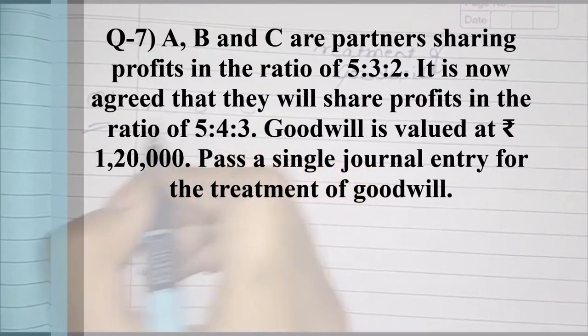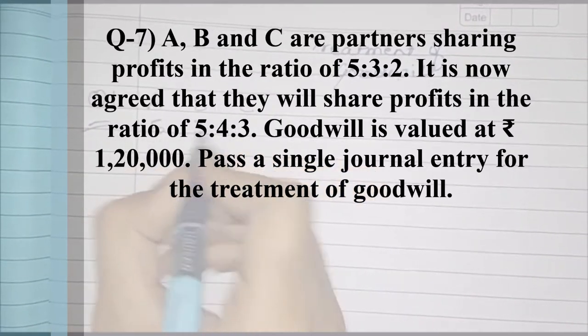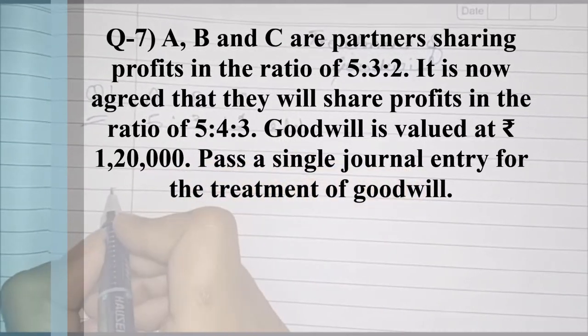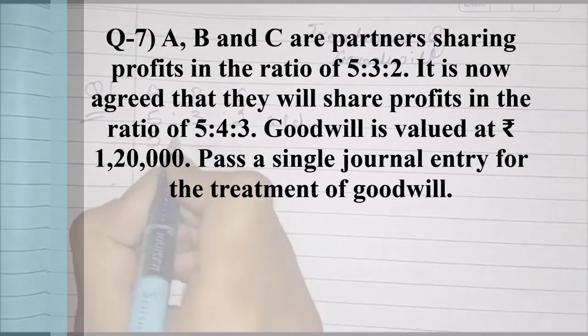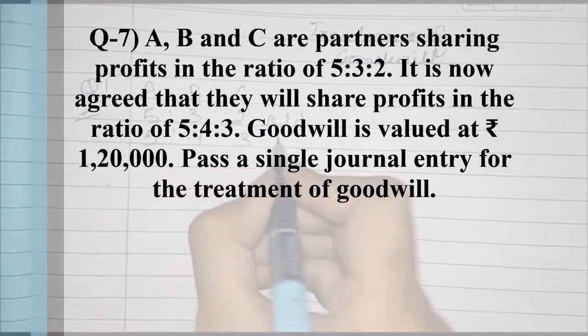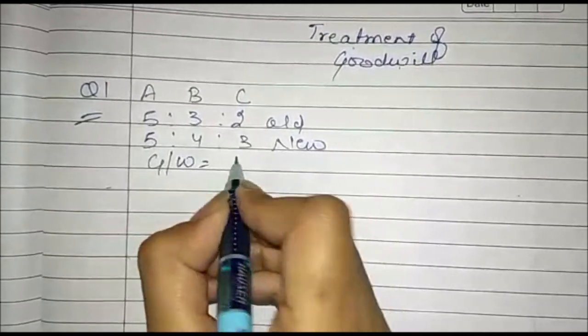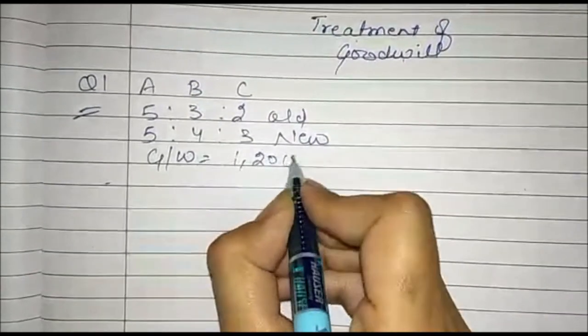The old profit sharing ratio is 5 to 3 to 2, and the new ratio is 5 to 4 to 3. Goodwill is valued at 1,20,000.